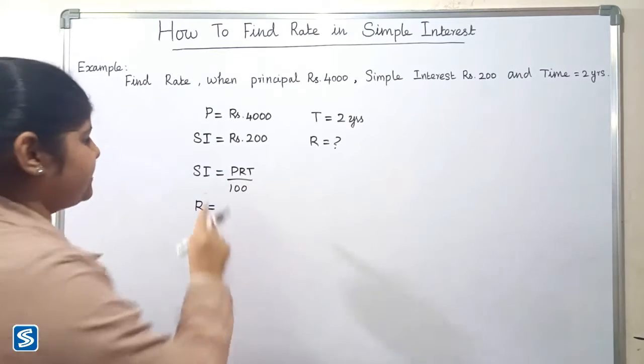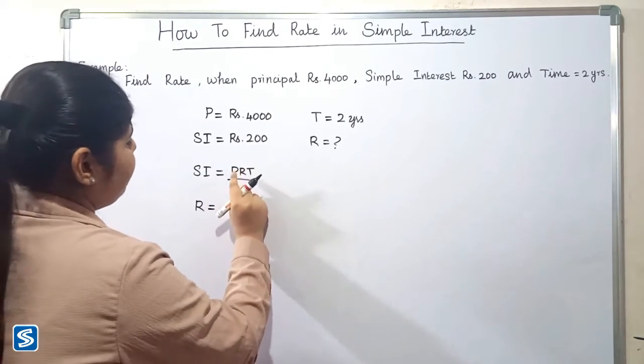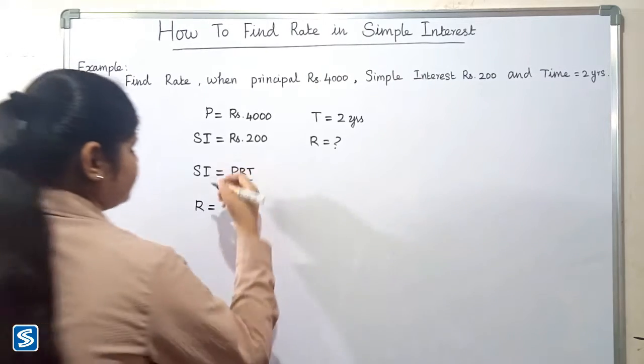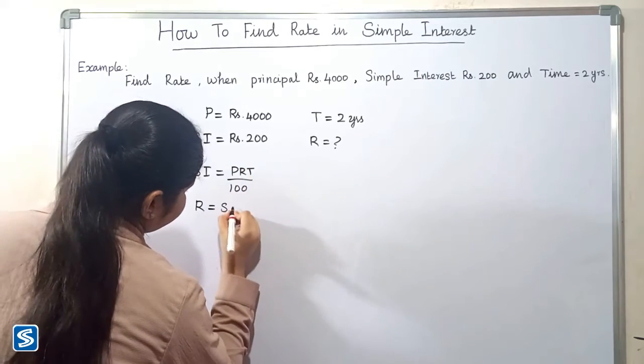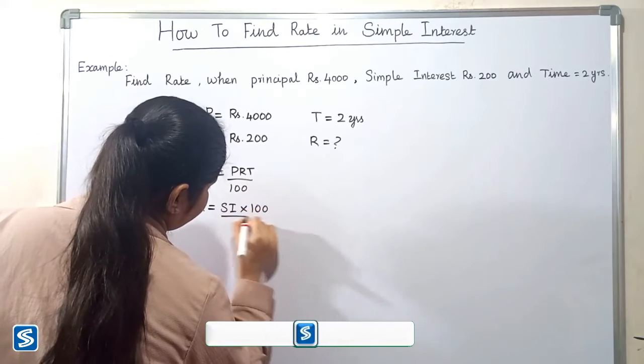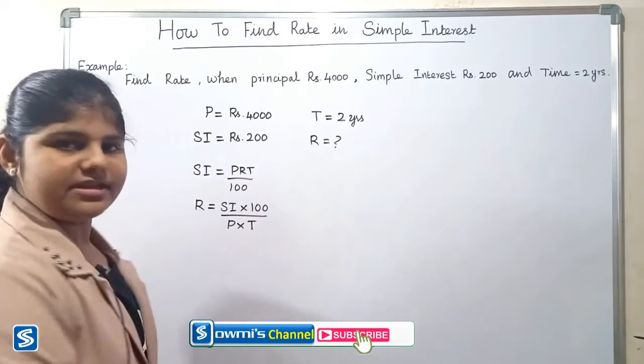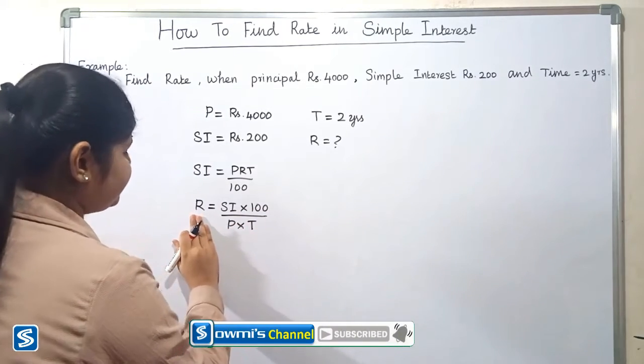equal to simple interest multiply 100 divided by P multiplied T. So the formula for finding rate of interest is simple interest multiply 100 divided by P multiplied T.